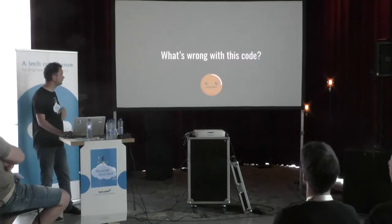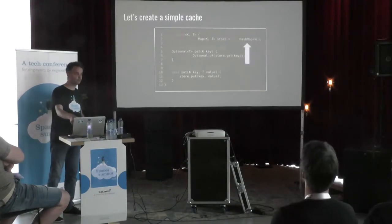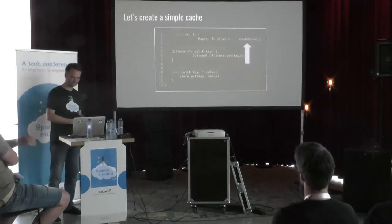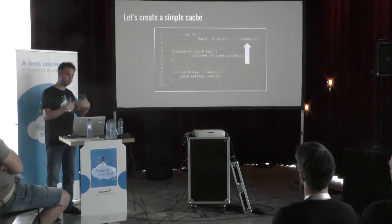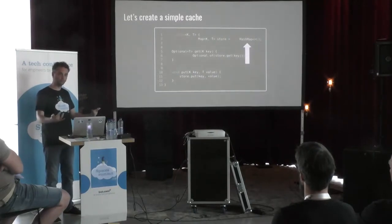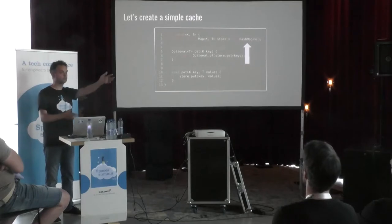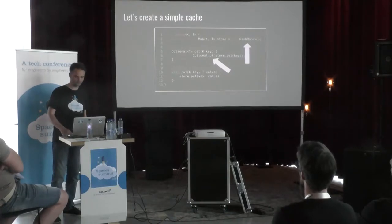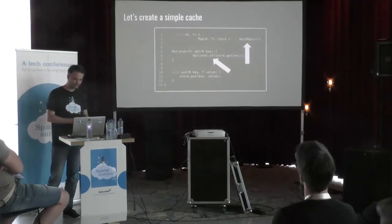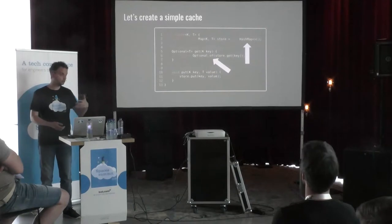But what's wrong with this code? It's not thread-safe — your HashMap is not thread-safe. So if you put something into the cache on two threads at the same time, one of the values is not going to be stored. Another bug: Optional.of doesn't work with nulls. If you put null into Optional.of it will throw an exception, because you need to use Optional.ofNullable.